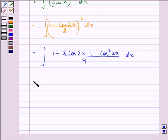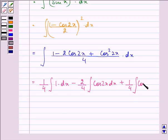Now, taking out 1 by 4 common, we have 1 by 4 into integral of 1 into dx minus 2 by 4 integral of cos 2x dx plus 1 by 4 integral of cos squared 2x dx.